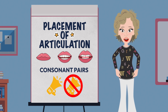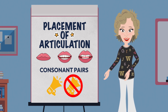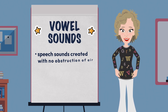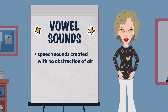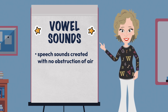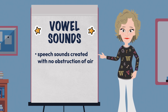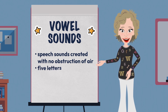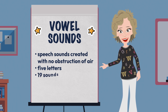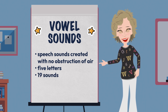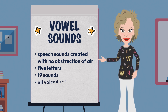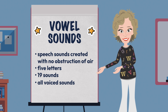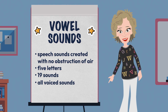We then turned our attention to the production of vowel sounds — speech sounds that are created or produced with no obstruction of air. There are basically five vowel letters but 19 vowel sounds, and all of these sounds are open voiced sounds because there is no obstruction of air.